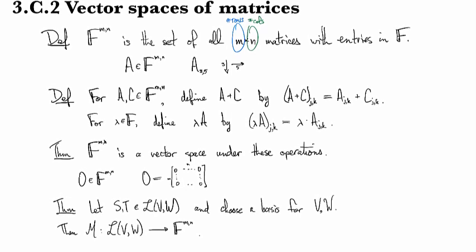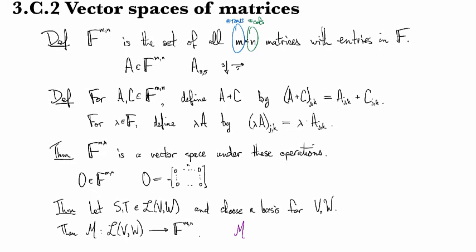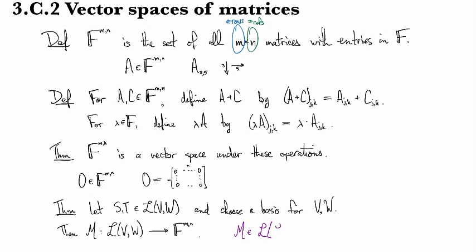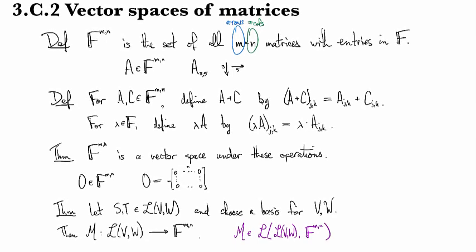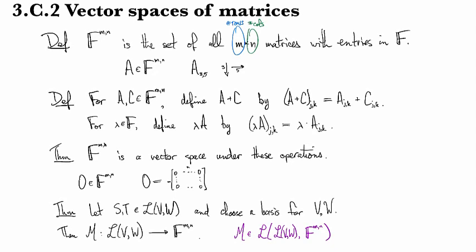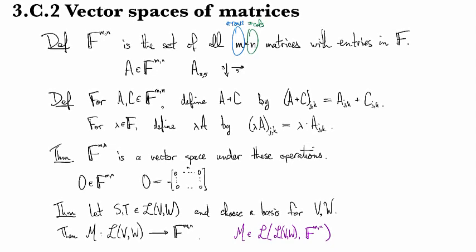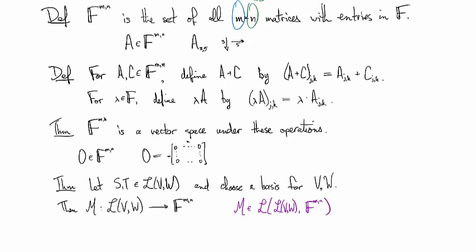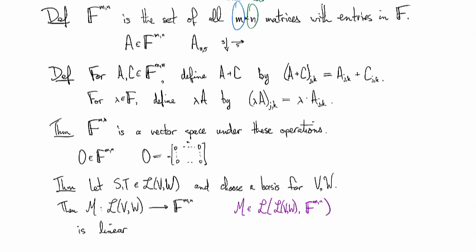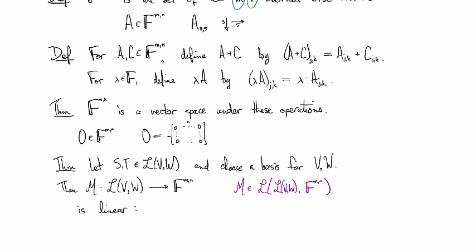So that's sort of a horrendous thing, but M here is actually an element of L from L of V W to F to the M N. So that's how we formalize this correspondence. So this thing here, I didn't finish my sentence. This map from L of V W to F to the M N is linear. So it's a linear map.